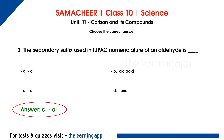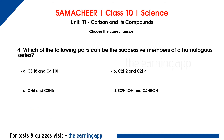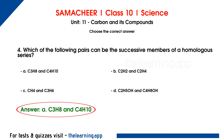Fourth question. Which of the following pairs can be the successive members of a homologous series? Options are A. C3H8 and C4H10, B. C2H2 and C2H4, C. CH4 and C3H6, D. C2H5OH and C4H12OH. Correct answer is option A, C3H8 and C4H10.